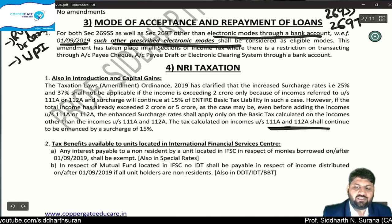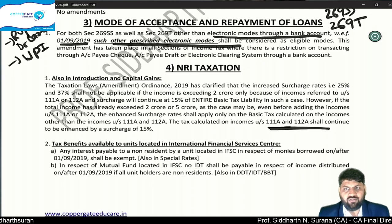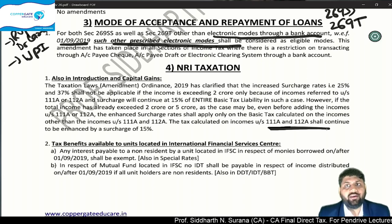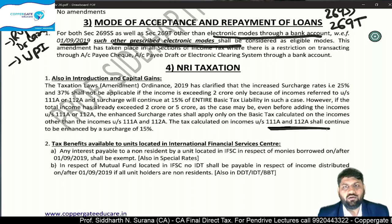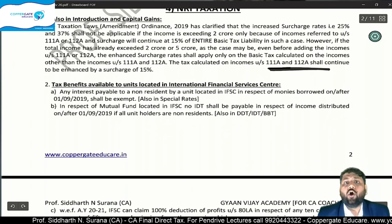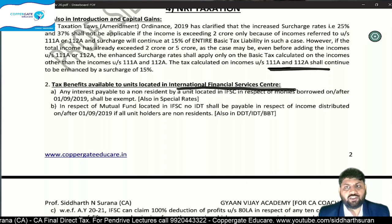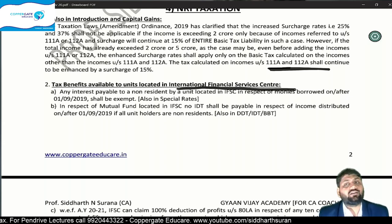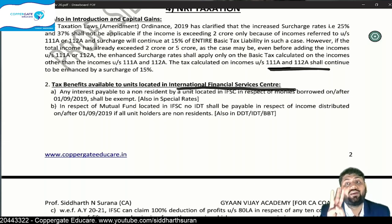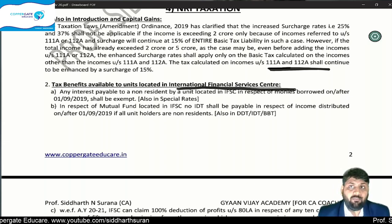In the NRI Taxation chapter, I teach students Sections 111A and 112A. So the surcharge rule — if income crosses 2 crore only because of 111A or 112A, then new surcharge won't apply; 15% will continue. If already crossed, new surcharge applies but tax on these income heads is still capped at 15% surcharge. NRI Taxation is also where I teach about International Financial Services Centers (IFSC). IFSC already has tax benefits: no DDT, no STT, yet 111A and 112A benefits apply, and MAT rate is 9% (not 18.5% or 15%).